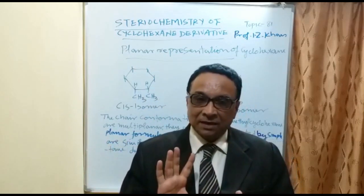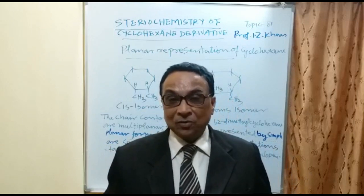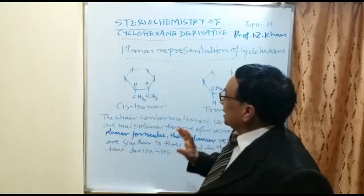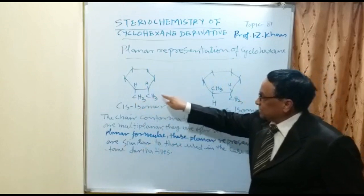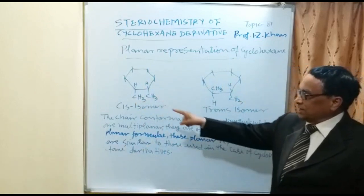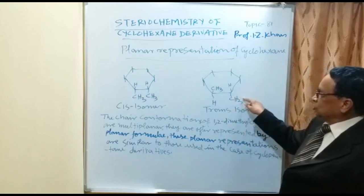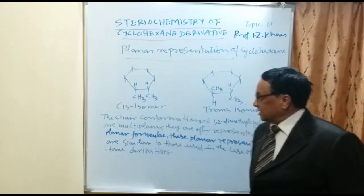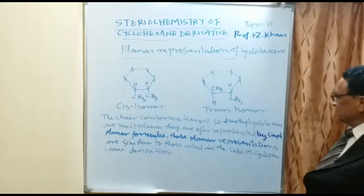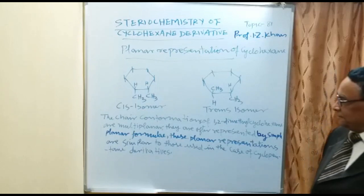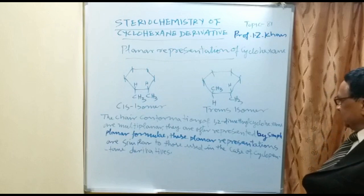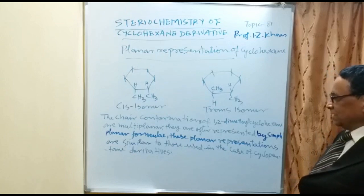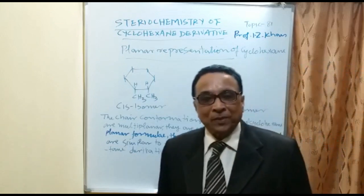We call them cis and trans because free rotation is not possible, so we can fix the positions on the same side or opposite side. Where the two methyl groups are on the same side, it is called the cis isomer; where the two methyl groups are on the opposite side, it is called the trans isomer. The chair conformation of 1,2-dimethylcyclohexane is multi-planar but is often represented by a simple planar formula. These planar representations are similar to those used in cyclopentane derivatives.